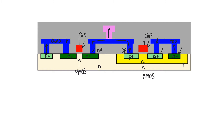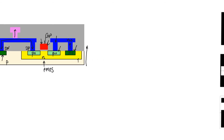Then we used a mask to create via one and deposited metal two. We move from bottom to top, with one specific exception: we create the gates first and then implant the n-plus and p-plus regions. The reason we did this was to have a self-aligned process, in which a slight mismatch between the poly and ion implantation masks will not lead to loss of transistor action, but will only lead to a change in the area of either the drain or the source.